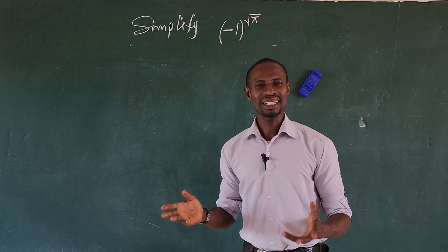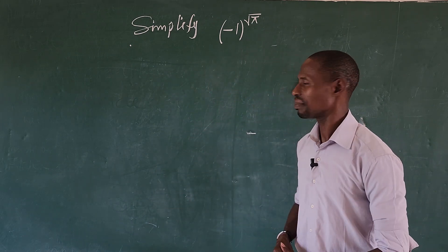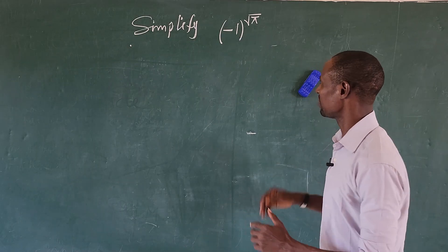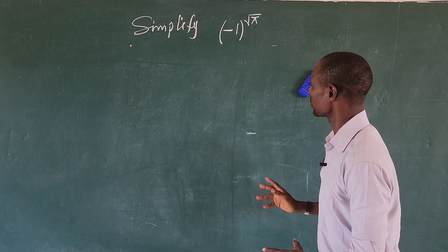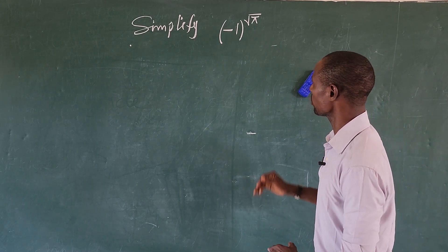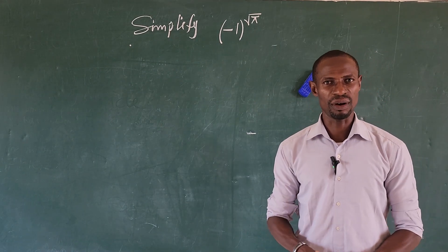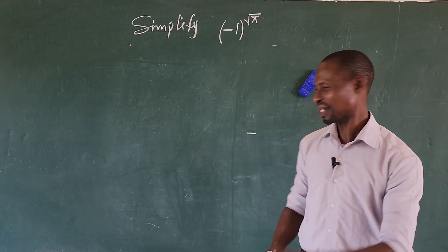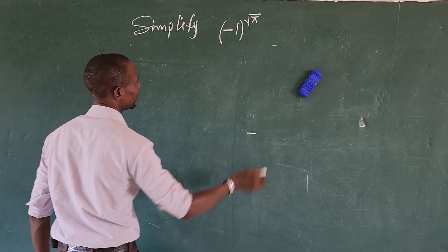Welcome to another math class. Today we have this challenge: simplify the expression (-1) raised to the power of the square root of pi. So how do you simplify this?